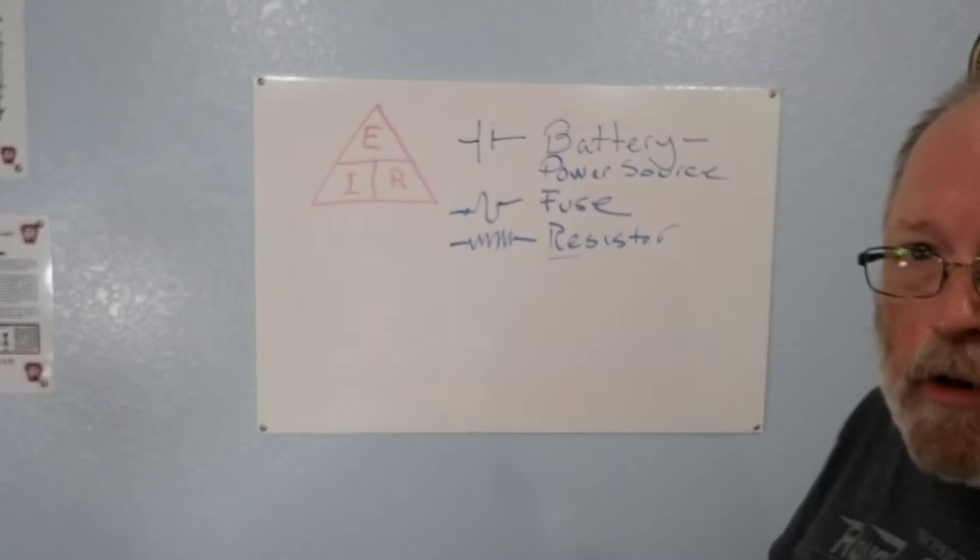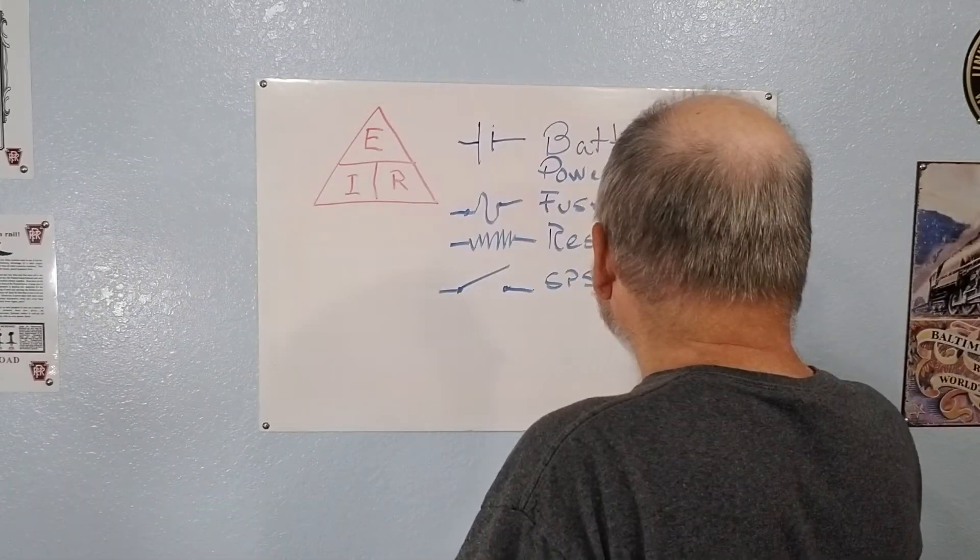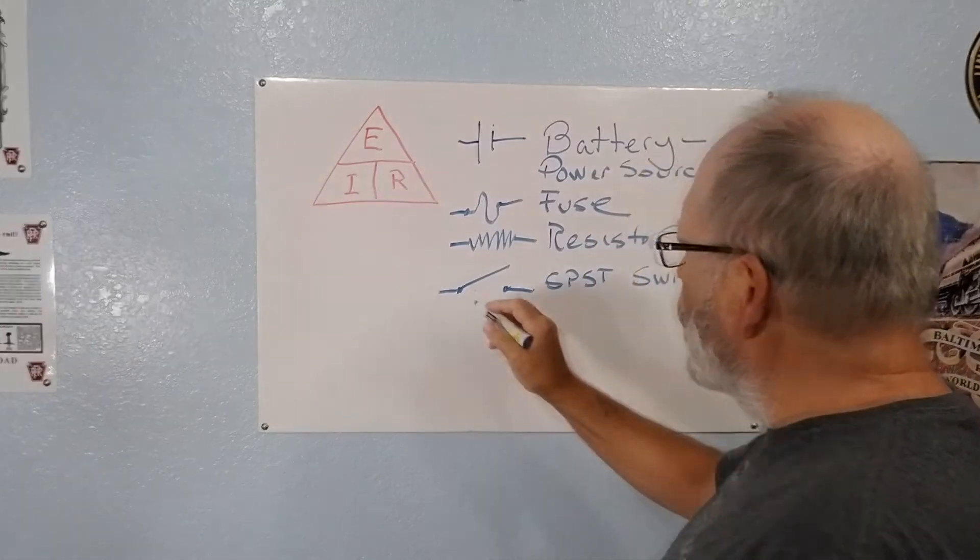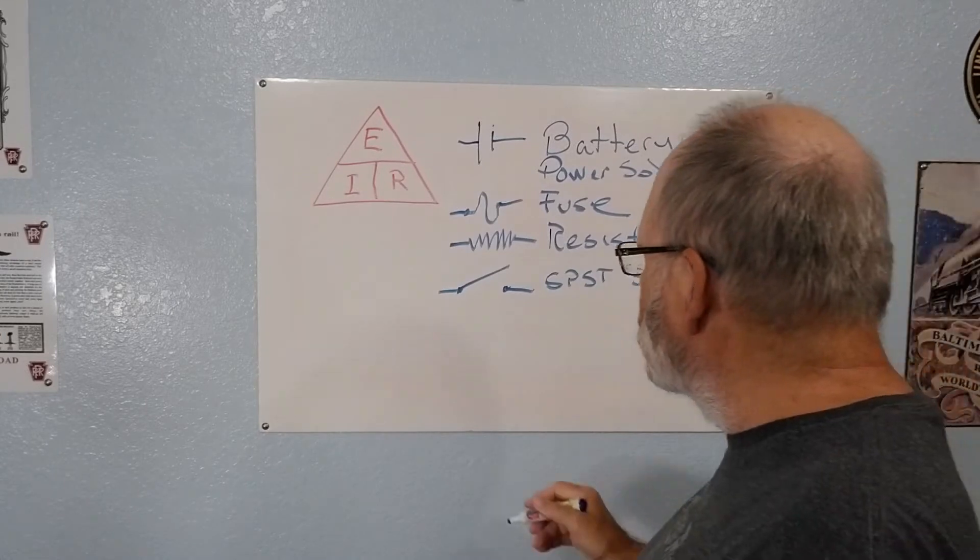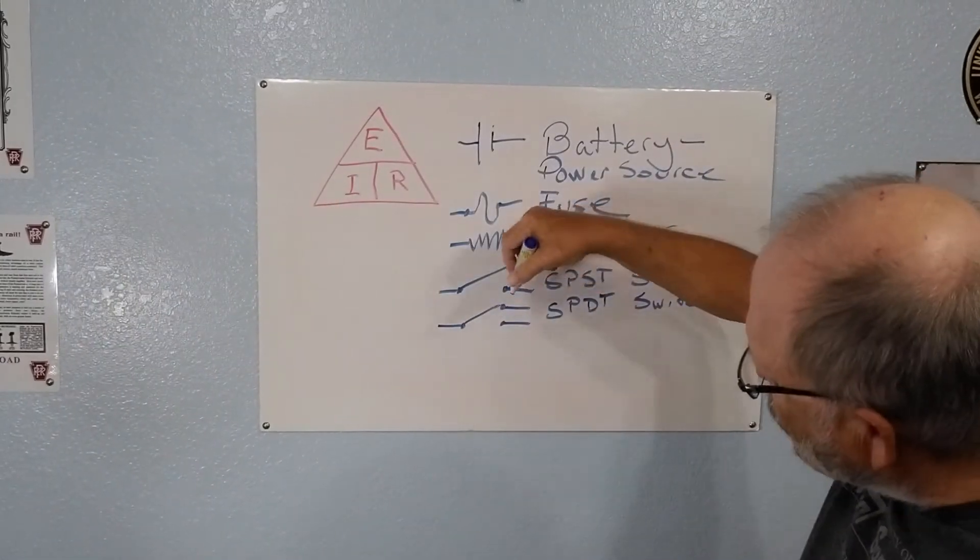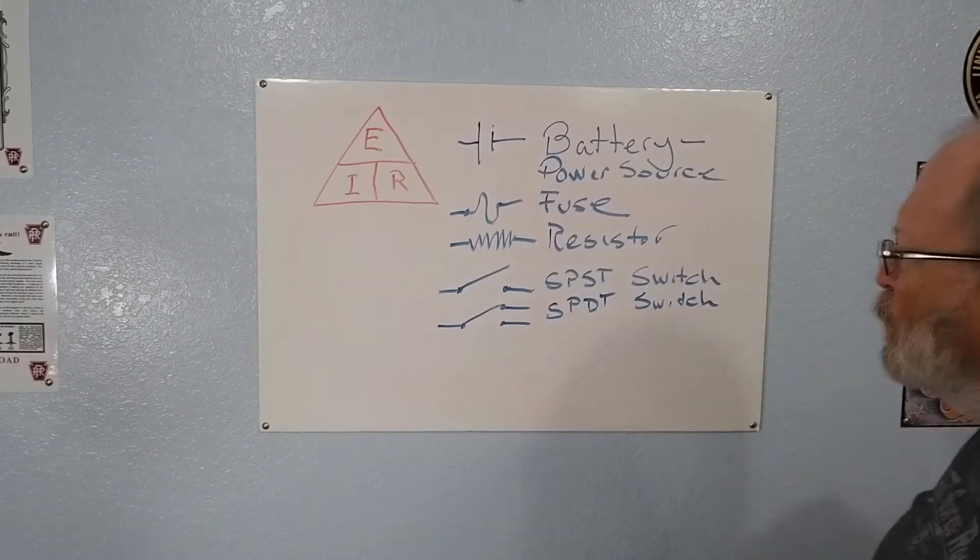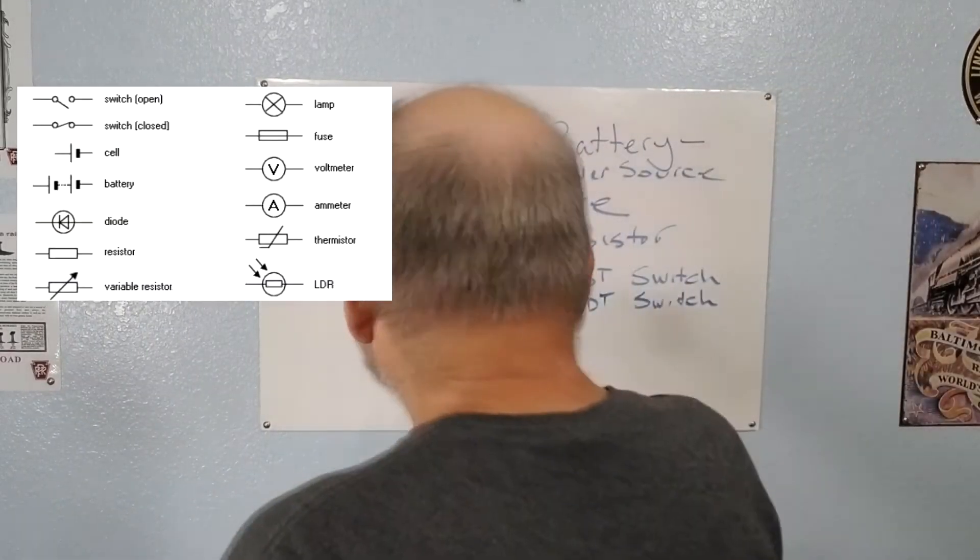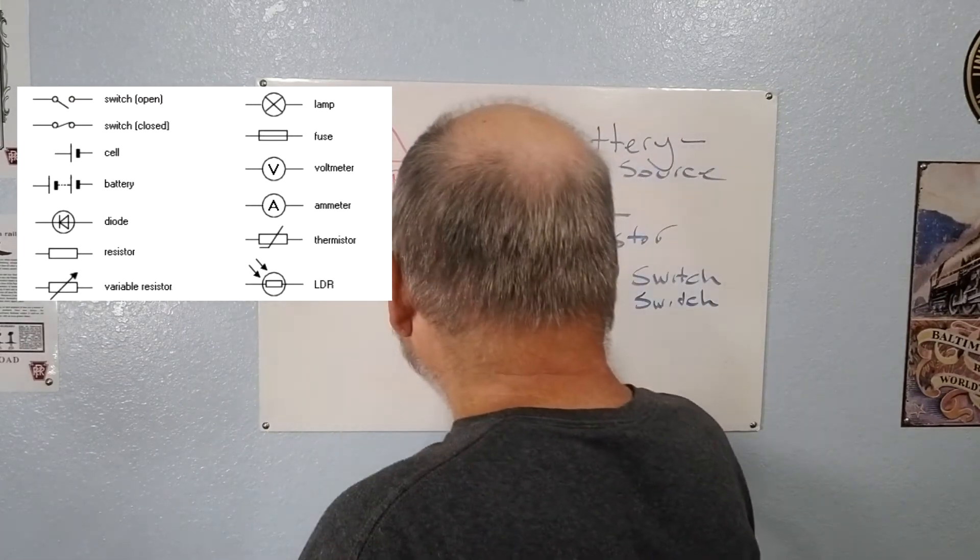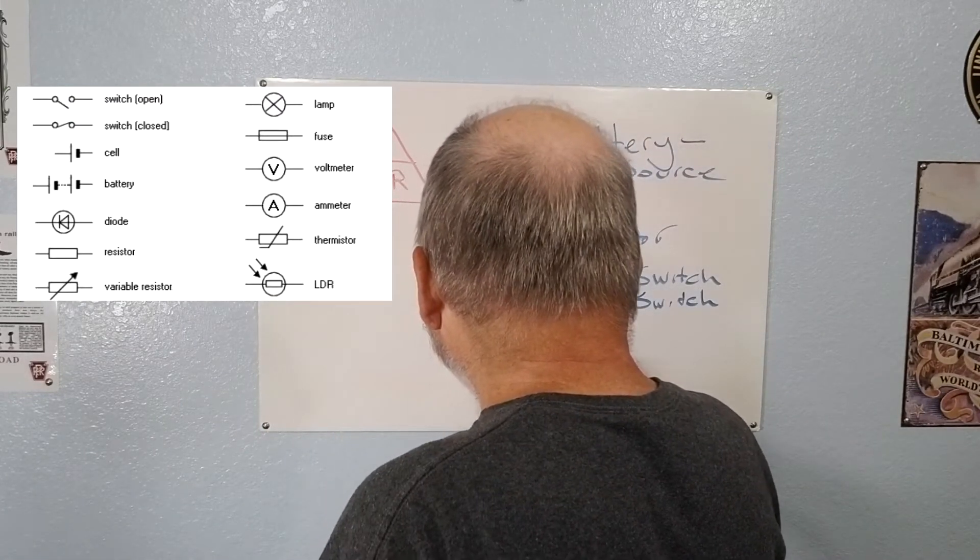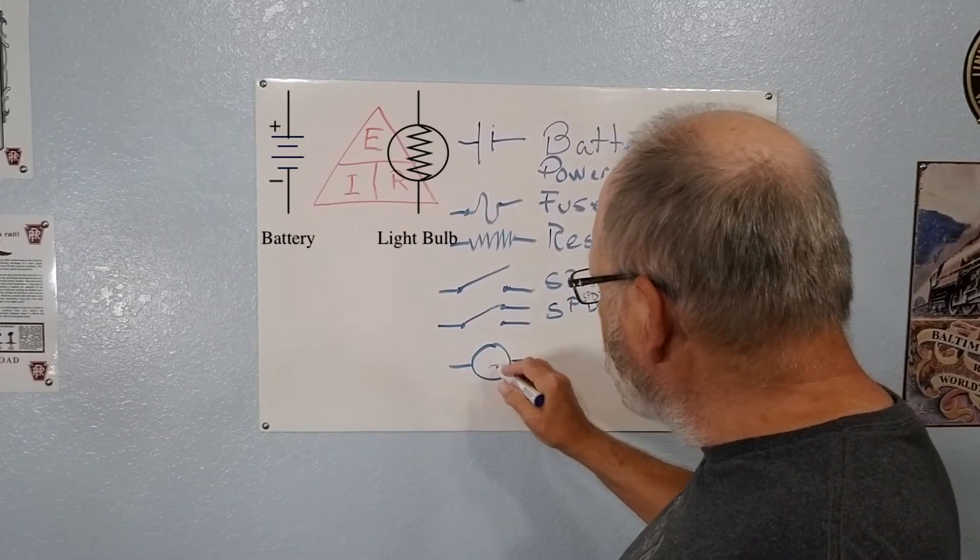That's a symbol for a resistor. That is a symbol for a single pole single throw switch. This right here, the bottom one right here, is a single pole double throw switch.